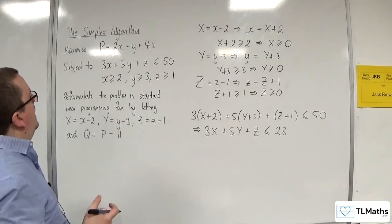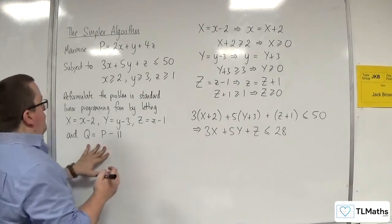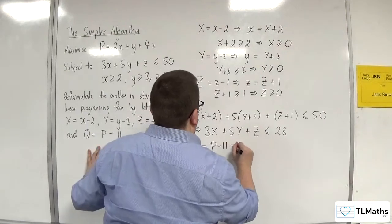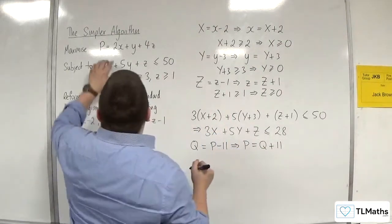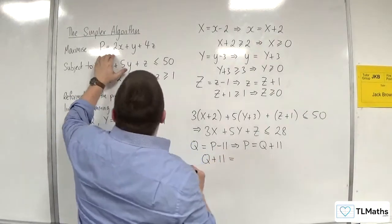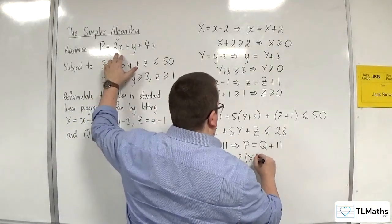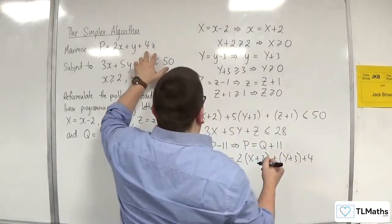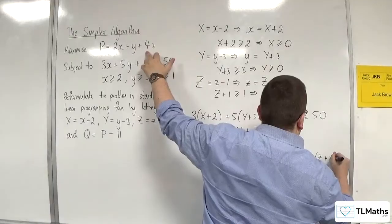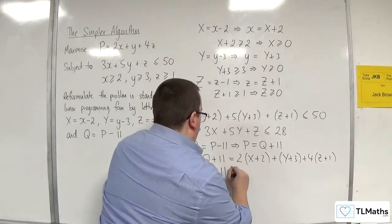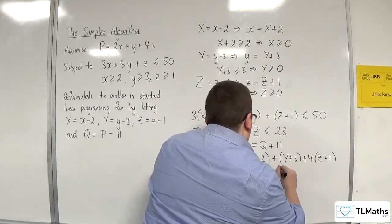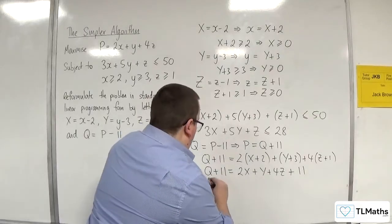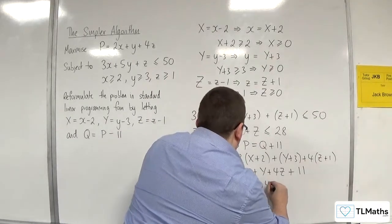For the objective function, P is replaced with Q + 11. So Q + 11 = 2(X+2) + (Y+3) + 4(Z+1), which gives Q + 11 = 2X + Y + 4Z + 4 + 3 + 4 = 2X + Y + 4Z + 11. The 11s cancel from both sides, leaving Q = 2X + Y + 4Z.